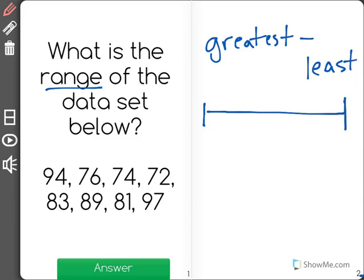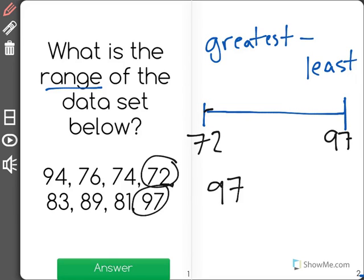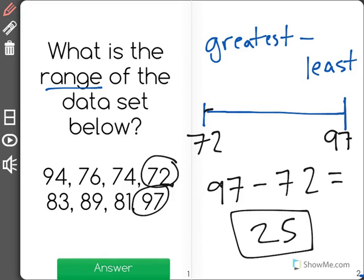So in this case, the least number we have in this data set is 72 right here, and the greatest number we have is 97. We're trying to find the difference between 97 and 72, and when I subtract those, I find a range of 25 for the correct answer.